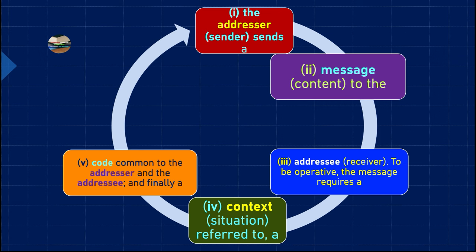Next, we need a code — a language common to both the addresser and the addressee. There must be a shared code between them, meaning a common language. For example, at this moment my code is the English language, and it is in this code that I am speaking.